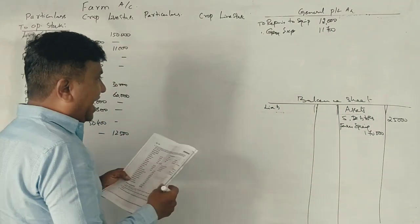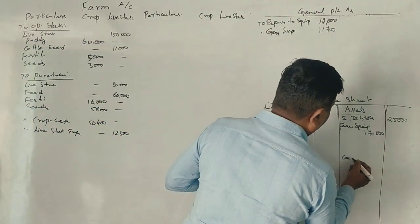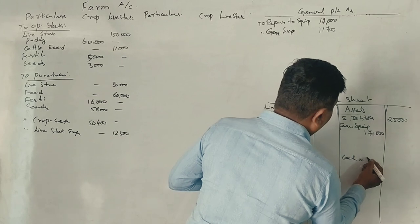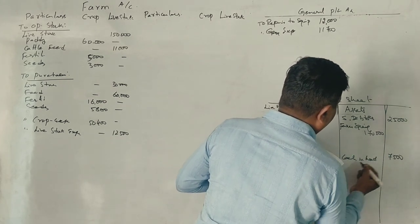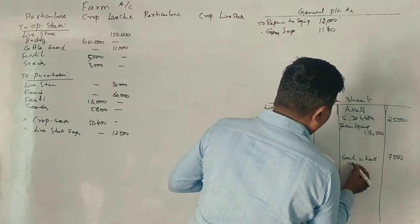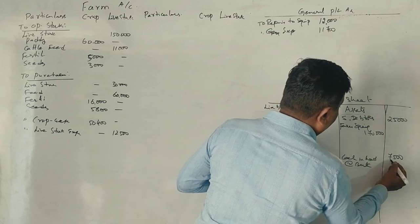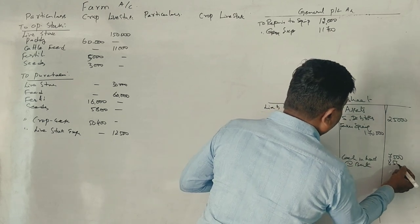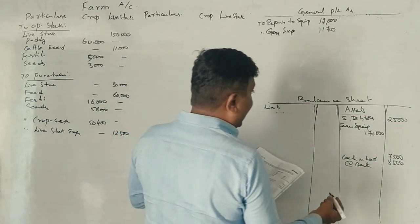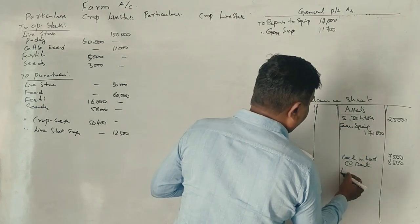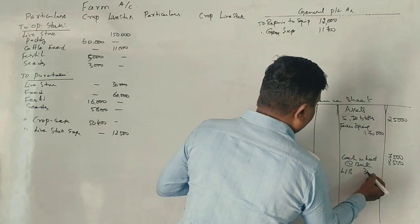Cash in hand: 7,500. Cash at bank: 8,500. Land and building: 30,00,000.